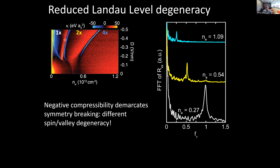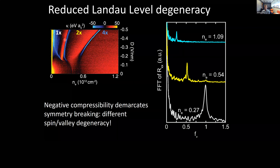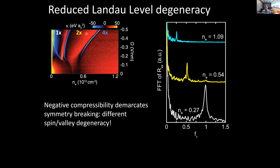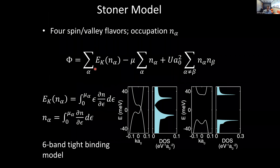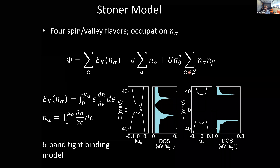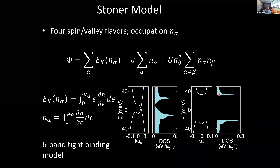As you lower the density, you just lose some degeneracies — the electron system polarizes. You can understand this reasonably quantitatively from a pretty simple Stoner model: you account for the kinetic energy, the chemical potential of each flavor, and put in some phenomenological repulsion which favors polarizing into some number of flavors. We do this for a realistic band structure at both zero and high displacement field. The comparison between experiment on top and theory on the bottom shows that the phase transition lines in the density-displacement-field plane follow the right qualitative behavior, tracking the evolution of density of states as a function of density from band structure.